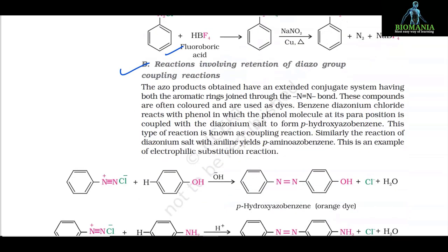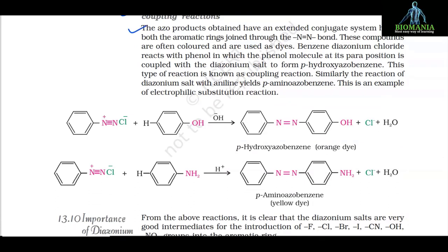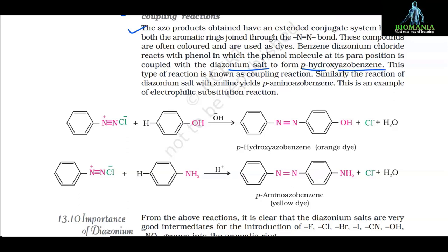B. Reactions involving retention of the diazo group — coupling reactions. The azo products obtained have extended conjugated systems with both aromatic rings joined through the -N=N- double bond. These compounds are often colored and are used as dyes. Benzene diazonium chloride reacts with phenol at the para position to form para-hydroxyazobenzene (orange dye), and with aniline yields para-aminoazobenzene (yellow dye). This type of reaction is known as a coupling reaction and is an example of electrophilic aromatic substitution.